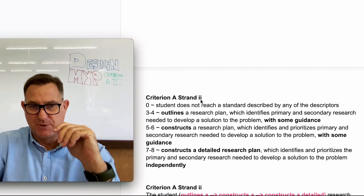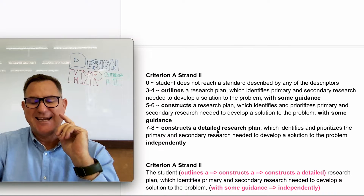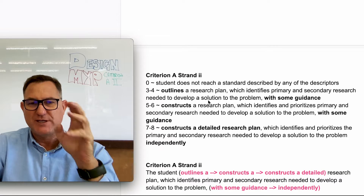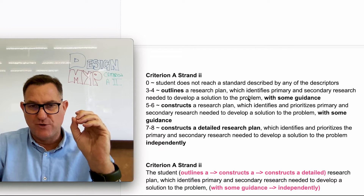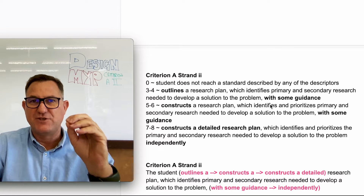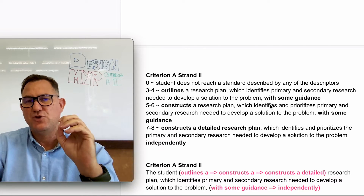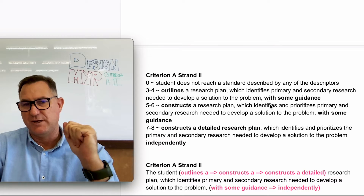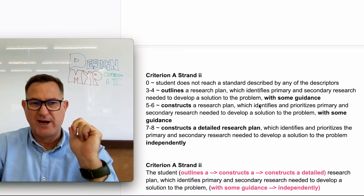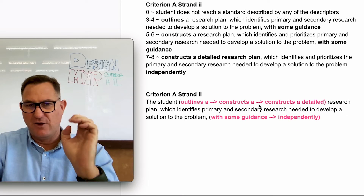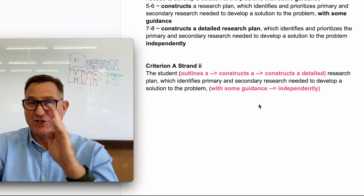To conclude, let's revisit the assessment criteria. If you can make a research plan, you'll get a score between three and six. But a detailed research plan gets you a score of seven to eight. Another key factor is independence — if the teacher or a parent has had to help you, you can only get a score of three to six. But if you create the research plan independently, you can score seven or eight. The key words that differentiate your score are 'outlining' versus 'constructing a detailed research plan.'